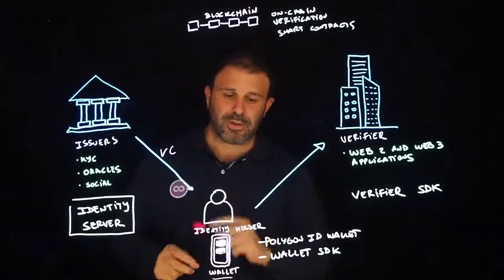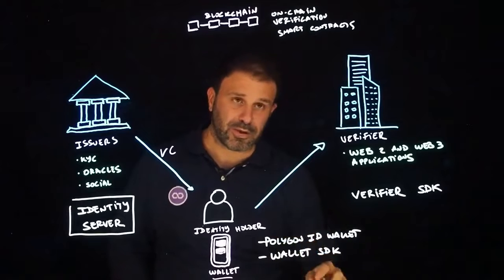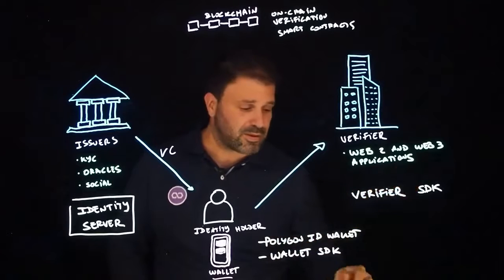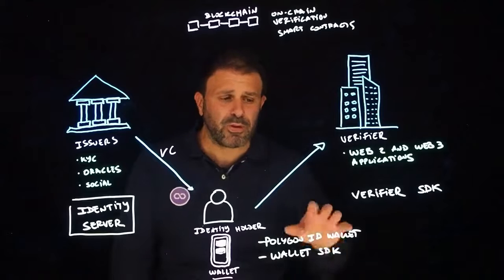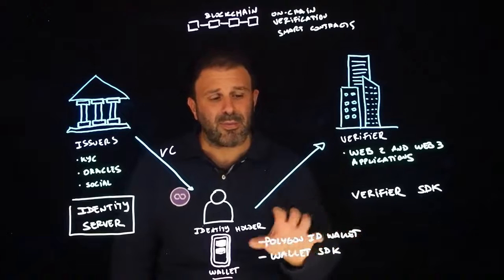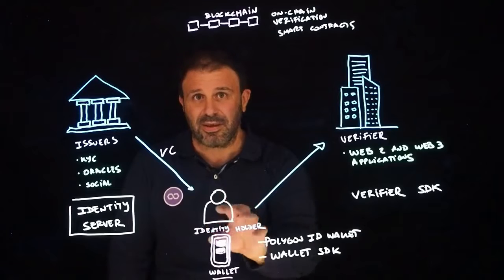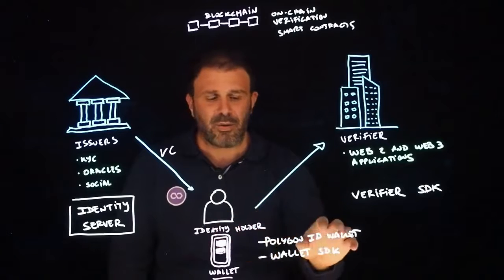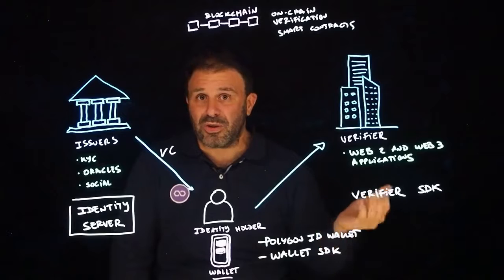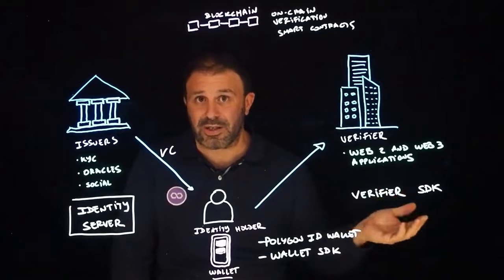So let's look at the wallet. Polygon ID also provides a wallet called the Polygon ID wallet, which you can find in the Google and Apple stores. But we don't want the Polygon ID wallet to be the only wallet to hold identities managed by Polygon ID — this is just a way to accelerate adoption for companies that don't have a wallet and want a quick start.